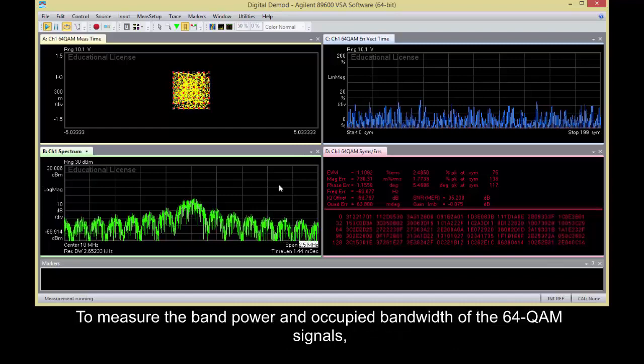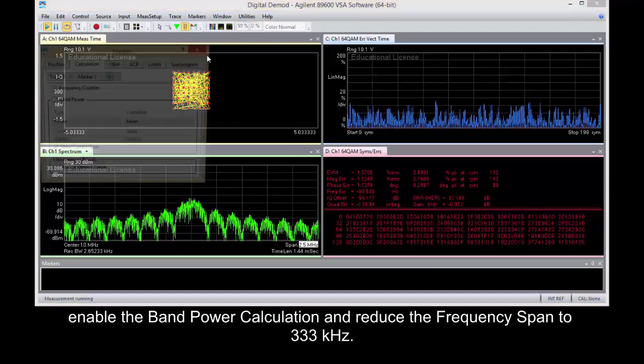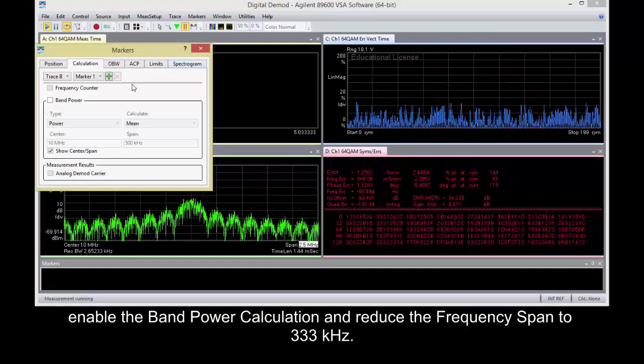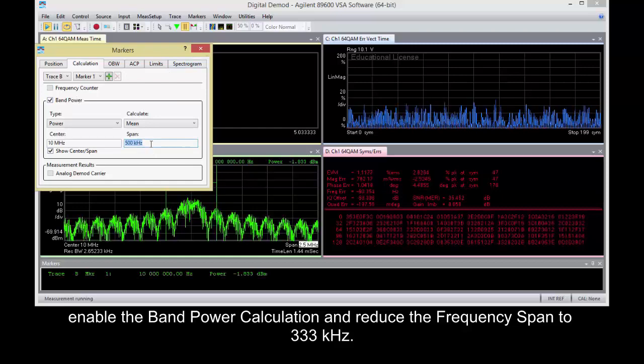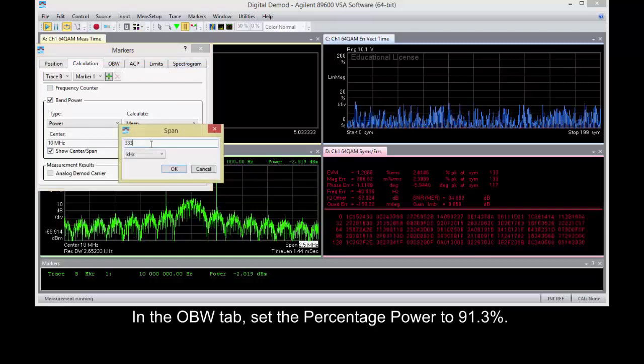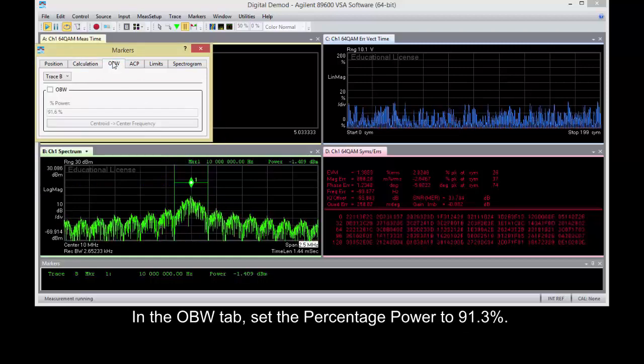To measure the band power and occupied bandwidth of the 64QAM signals, enable the band power calculation and reduce the frequency span to 333 kHz. In the OBW tab, set the percentage power to 91.3%.